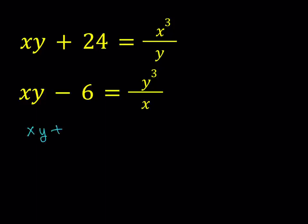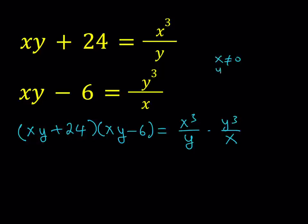What happens when I do? I'll multiply xy plus 24 by xy minus 6. On the right hand side, I'll have this. When I simplify this, obviously here we don't want x to be 0 or y to be 0. When they're not 0, then we're good. We can just go ahead and simplify this. x cubed divided by x becomes x squared, and y takes out one of these y, so that becomes y squared.